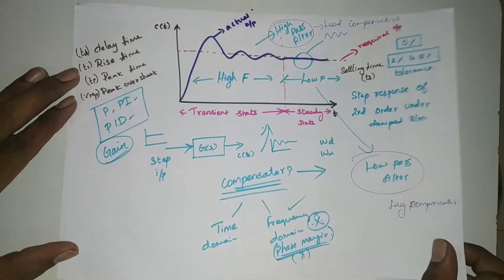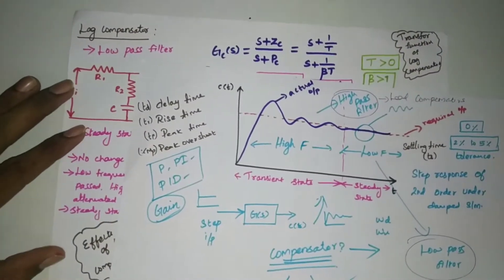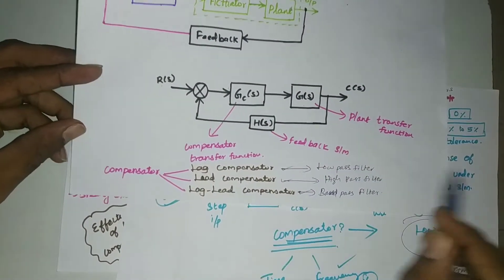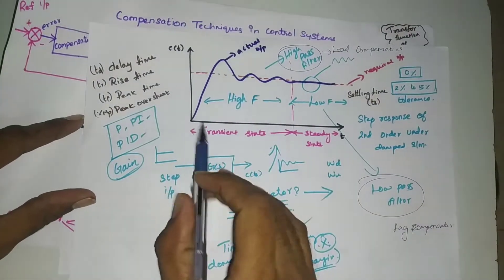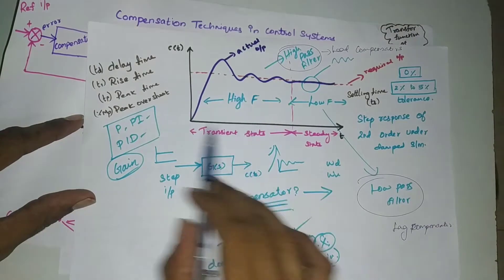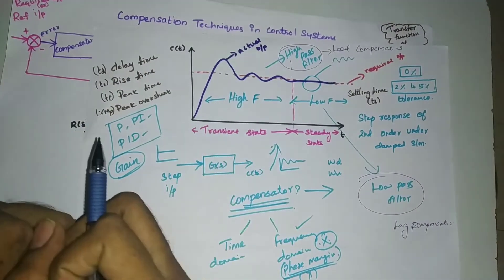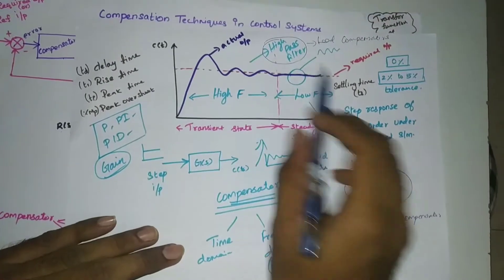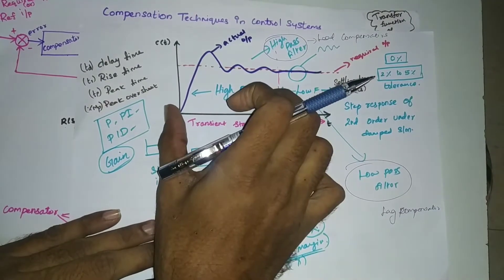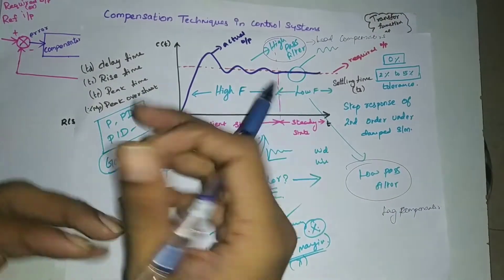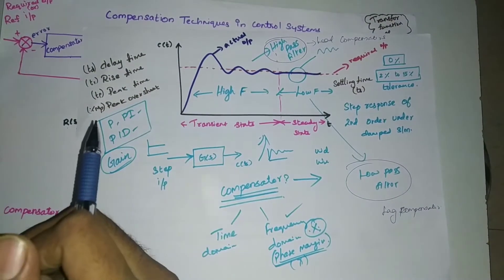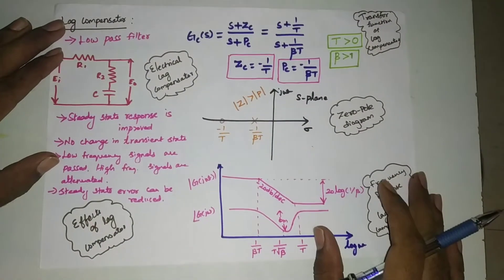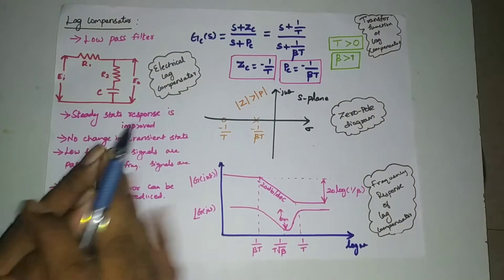As we discussed in our previous lecture, there are three compensators: lag, lead, and lag-lead. Transient states have high frequency components and steady states have low frequency components. So first we need to filter them out, and then we need to correct the corresponding region.